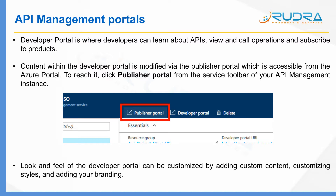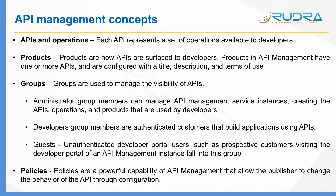Let me take you through some of the key concepts associated with API management. The first is APIs and operations: each API represents a set of operations available to developers, such as CRUD operations on an object. The second is products: products are how APIs are surfaced to developers. Each product can contain multiple APIs — for example, a weather product can contain a temperature API, a wind speed API, and so on. This is how you group related APIs and offer them as a product to customers or developers.